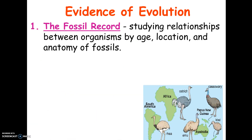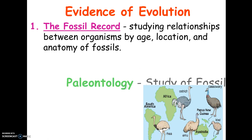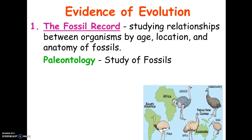The first way we study evolution, which is probably the most obvious way, is through the fossil record. We can look at the age of fossils, date them, look at where they're located, and study their anatomy and compare it to organisms that live today. This gives us a lot of information about organisms that lived in the past and how they've changed.